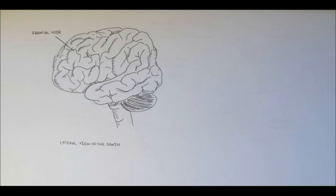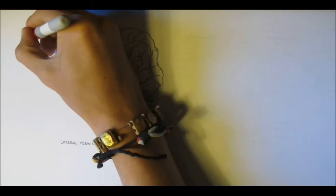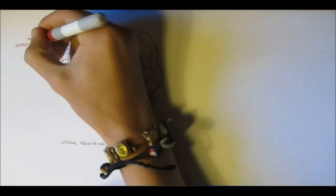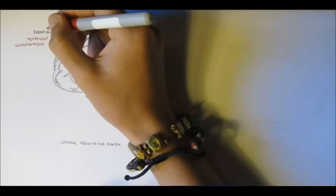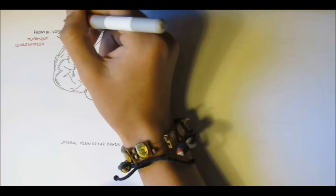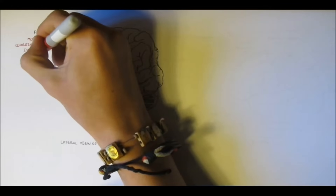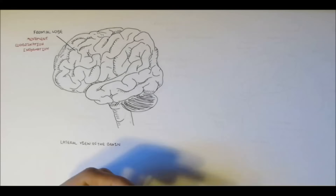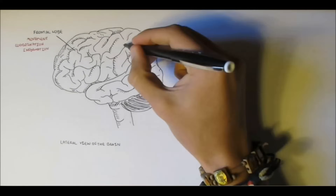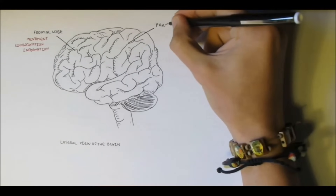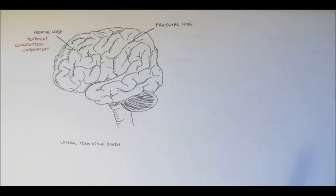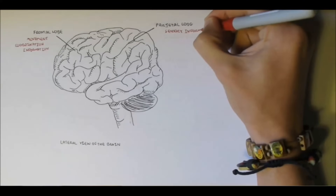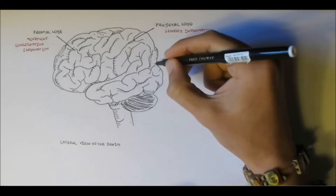The frontal lobe is important for movement, coordination and information. It is associated with problem solving, reasoning and planning. Right behind the frontal lobe, on the top of our heads, is the parietal lobe. The parietal lobe is important in sensory information — receiving stimuli and perception.